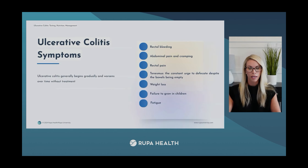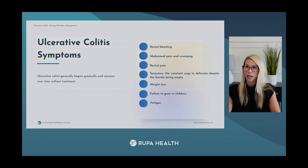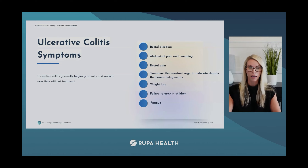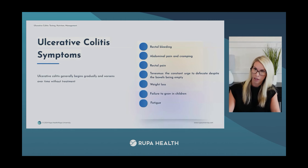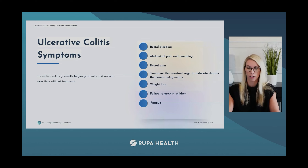Ulcerative colitis generally begins gradually and worsens over time, especially without treatment. However, onset can sometimes be sudden. Symptoms range in severity and depend on whether the person is having a flare-up or is in remission. When in remission and free of symptoms, that can last weeks to years. Treatment is really focused on maintaining remission as long as possible.